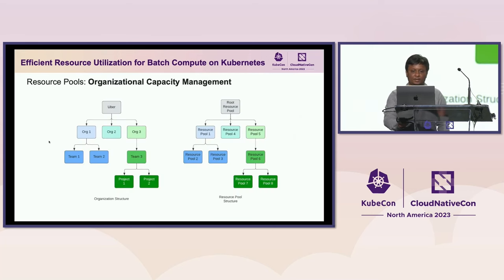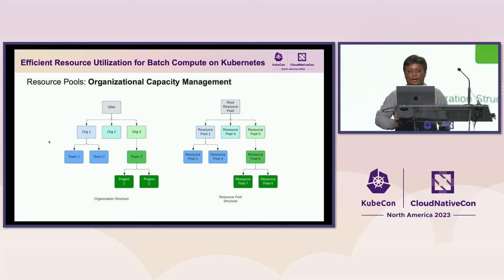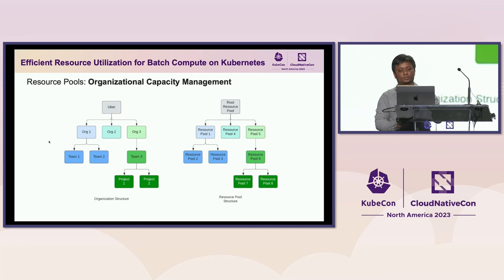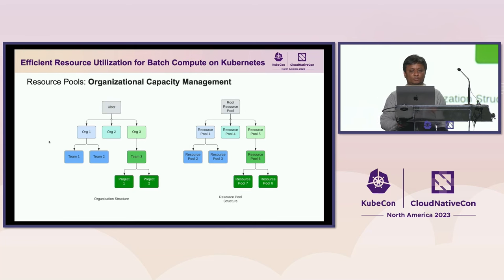How do we solve this sharing problem? At Uber, we have a concept of resource pools. A resource pool is a logical abstraction of a set of resources like CPU, memory, and GPU. In this picture, on the left half we have shown the organizational hierarchy of Uber, and on the right half we show the similar hierarchical structure for the resource pools. Total resources available at the root level get distributed among the children, which means the sum of children's resources equals the resources available at the parent level. This hierarchical structure of resource pools helps us achieve sharing between teams, projects, and orgs. Going forward, Kevin will explain how these resource pools are used for sharing.